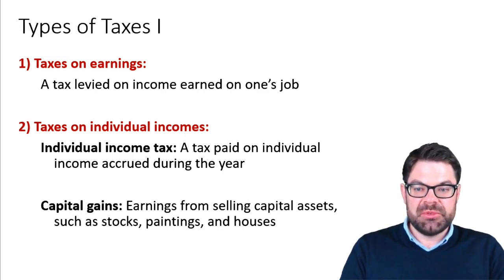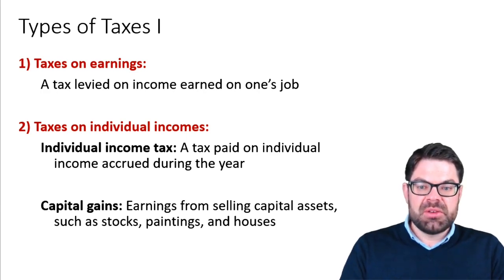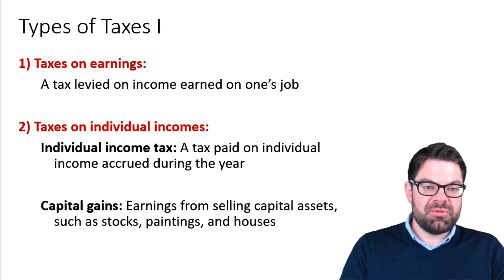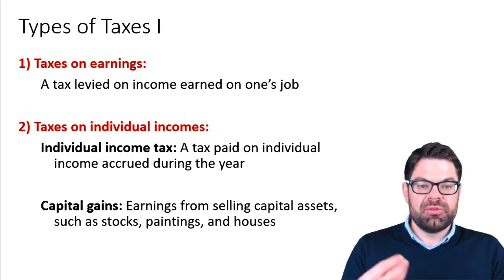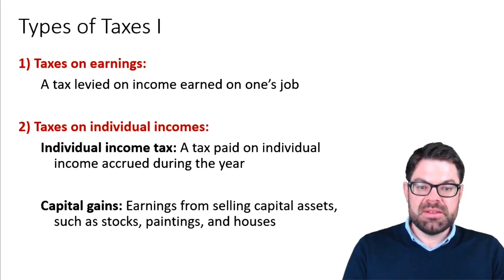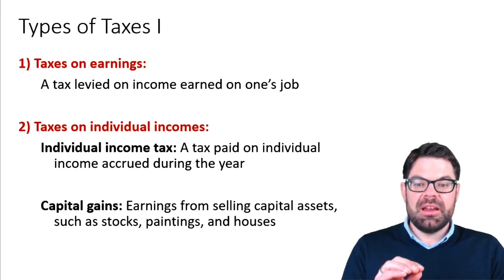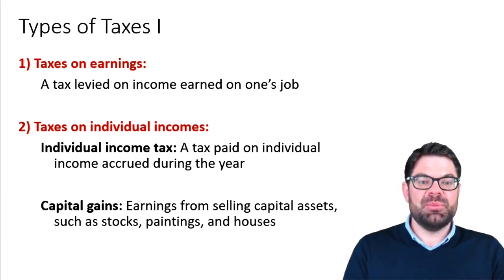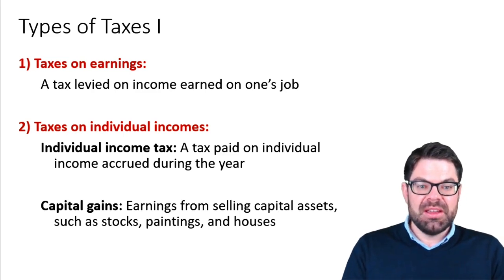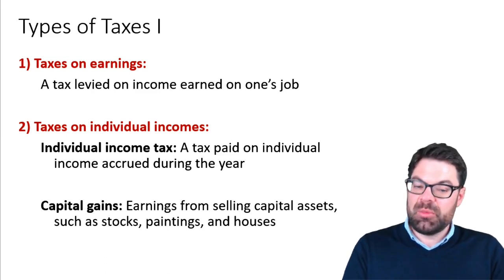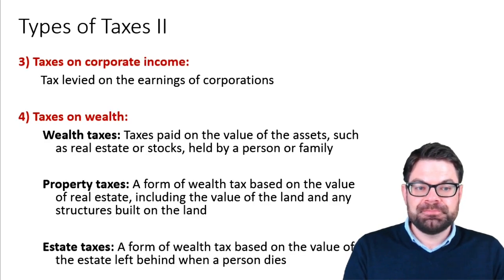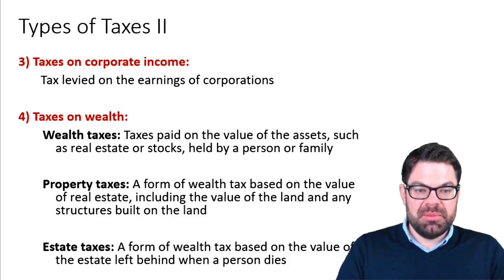There is also a tax on capital gains, which differs from regular income from capital such as dividends or bond payments. Capital gains tax applies when you sell an asset — such as a house, stocks, or paintings — at a profit. That profit is counted as a gain and capital gains tax must be paid on it; how much depends on the country.